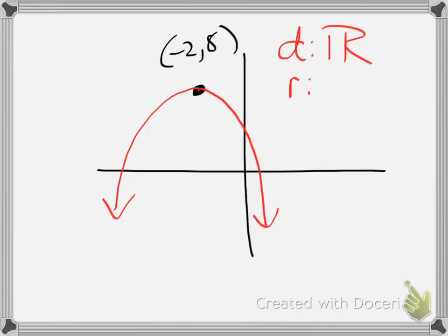The range we'll find by using the vertex. So since this graph, as you can see, is everything below this value of 8, and since the range refers to y values, we're focusing on the 8. And if everything is less than 8, we can say that the range is going to be y, such that y is less than or equal to positive 8. Or in interval notation, we would say negative infinity to positive 8 with a bracket.